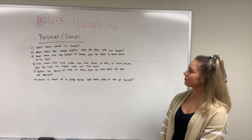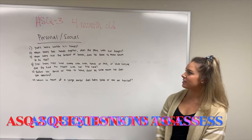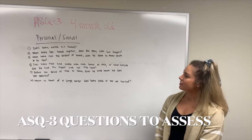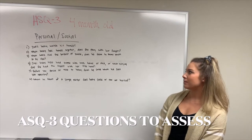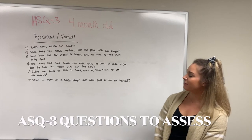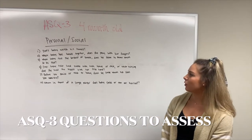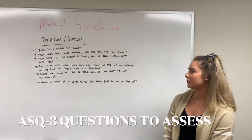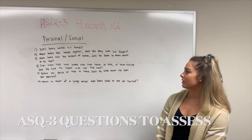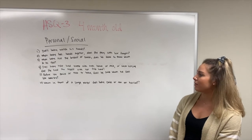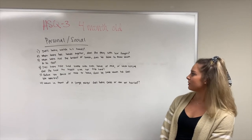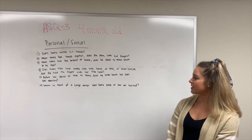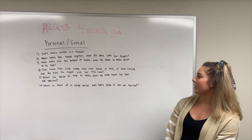For the personal and social section, questions include: Does baby watch his hands? When baby has hands together, does she play with her fingers? When baby sees the breast or bottle, does he seem to know when to be fed? Does baby help hold the bottle with both hands at once? Or when nursing, does she hold the breast with her free hand? Before you smile or talk to baby, does he smile when he sees you nearby? When in front of a large mirror, does baby smile or coo at herself?